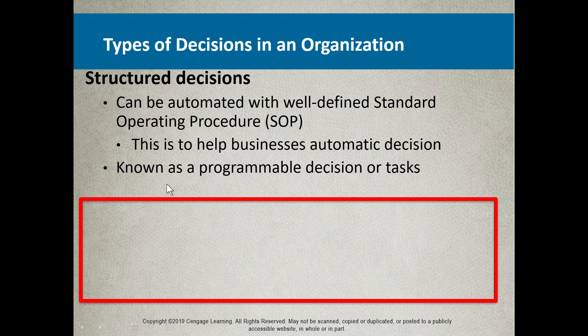These are known as programmable decisions or tasks, because they work almost like an algorithm: step one, do this; if that happens, do that. Following company SOPs is part of company policy. These SOPs are laid out by senior management, reviewed by committees and stakeholders, and agreed upon or voted on as the structures people need to follow.